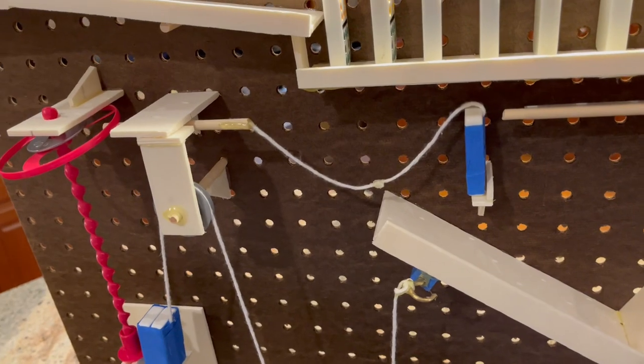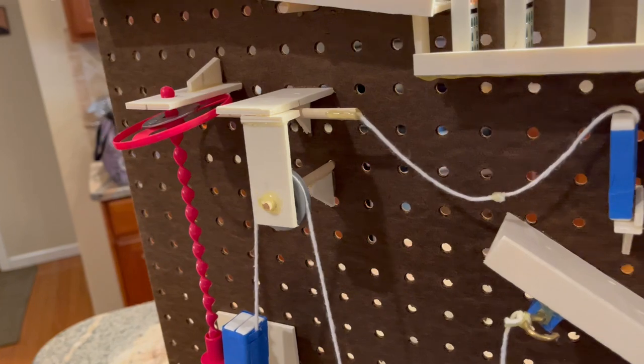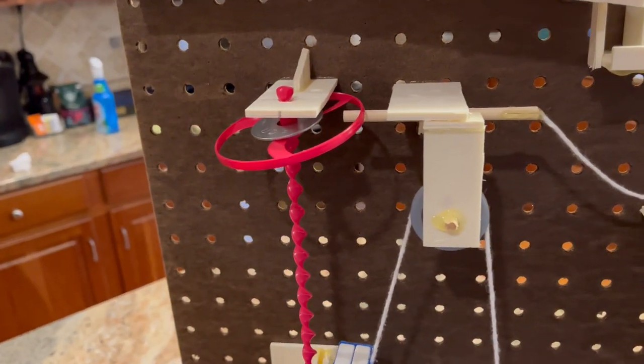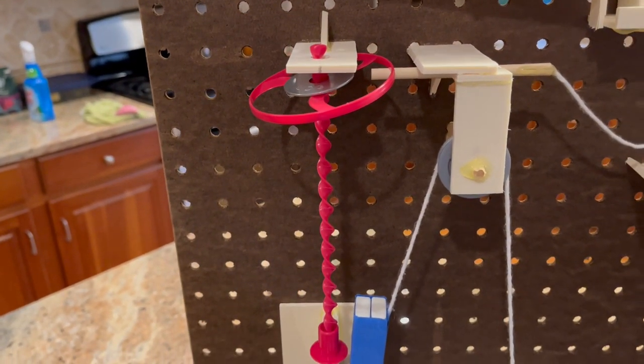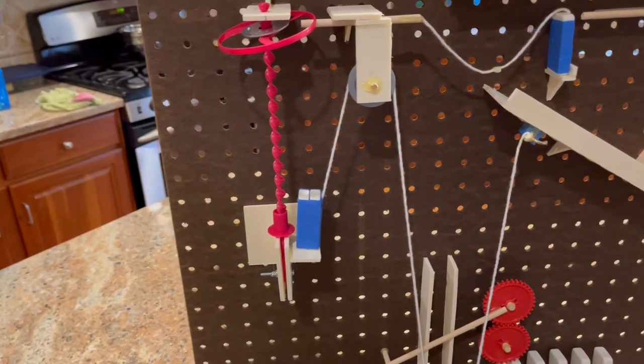The string from the previous feature then pulls out a wooden rod or a release pin that releases a plastic pinwheel that spins down a plastic screw to the next feature. Once the plastic pinwheel reaches the near bottom of the plastic screw, it has two dominoes glued to each side and a string.